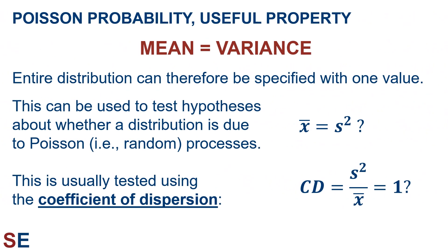The Poisson distribution has an incredibly useful property whereby the mean of the distribution is mathematically equal to its variance. The entire distribution can therefore be specified with one value. This is useful because this relationship can be used to test hypotheses about whether a distribution we observe is due to Poisson — that is, random — processes or not. If it is, then the mean should be equal to the variance. This is usually tested using the coefficient of dispersion, where the coefficient of dispersion equals the variance divided by the mean, and we're usually interested in whether it's equal to one or not.